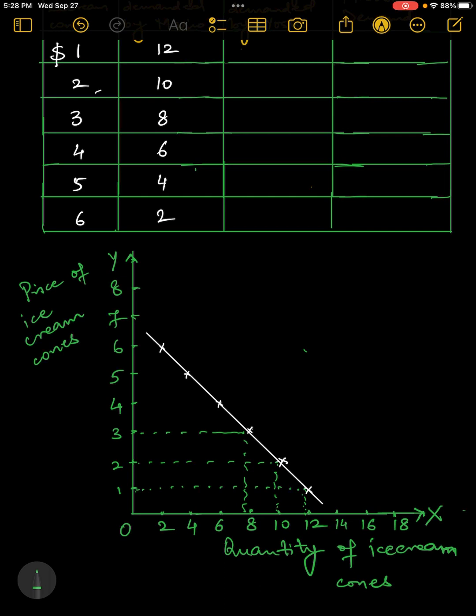This demand curve is showing me the quantities of ice creams demanded by Mario at various prices. And what we need to notice here is what kind of a curve. This curve is showing me inverse relationship between price and quantity demanded. That if price is going up, the quantity demanded by Mario is going to the left, it's going down. So this is what we understand with law of demand.